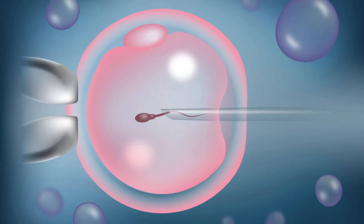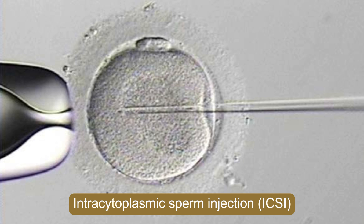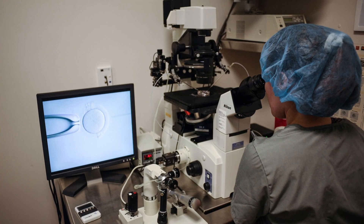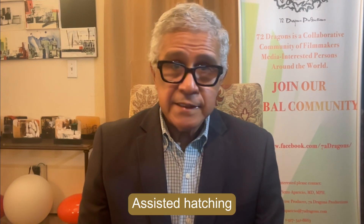Let us discuss them briefly. One of the most important types of micro-manipulation techniques in in vitro fertilization is intra-cytoplasmic sperm injection. Intra-cytoplasmic sperm injection critically analyzes severe cases of male infertility and utilizes specialized robotic equipment to individually inject each egg with a single sperm.